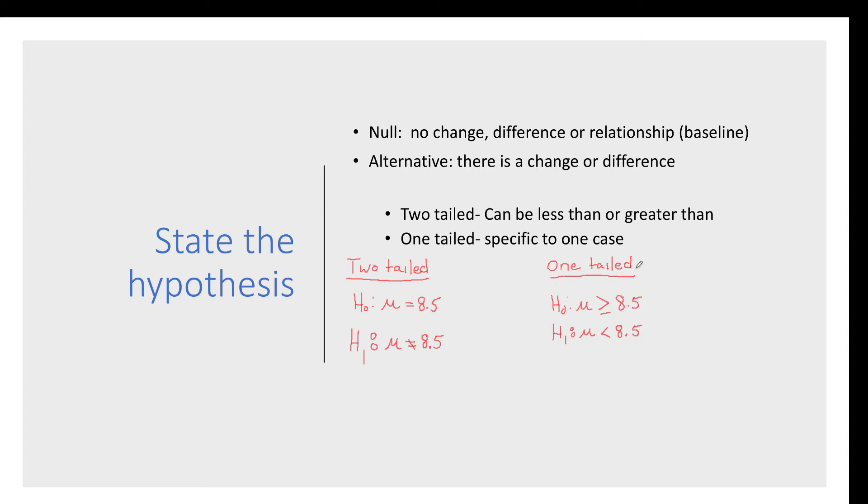So the wording of the actual question in the research problem will indicate either a less than or greater than situation in which you have a specific case or one-tailed hypothesis. In the absence of a specific case, we default to a two-tailed test.